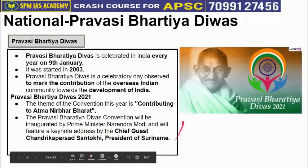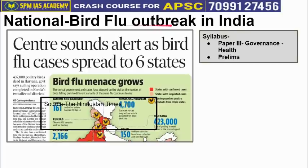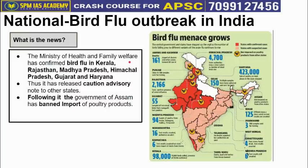The next article is from the national segment about Bird Flu outbreak in India, important from Paper 3, Governance, sub-sector Health. The Ministry of Health and Family Welfare has confirmed Bird Flu outbreaks in 6 states: Kerala, Rajasthan, Madhya Pradesh, Himachal Pradesh, Gujarat, and Haryana. An advisory has been released for remaining states to remain vigilant as bird flu can spread further. State governments have banned the import of poultry products because of the bird flu outbreak.